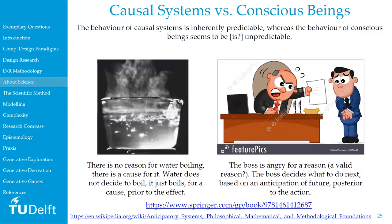The distinction between the sciences of the artificial and the natural sciences is also importantly about non-conscious things or systems versus conscious beings, which cannot easily even be called systems. The distinction is between a reason and a cause: there's no reason for water boiling — it just boils when you warm it to a certain point. But when you're talking about humans, the behavior of conscious beings is governed by reasons or anticipations of the future, which are posterior to the action, whereas a cause is prior to the action.